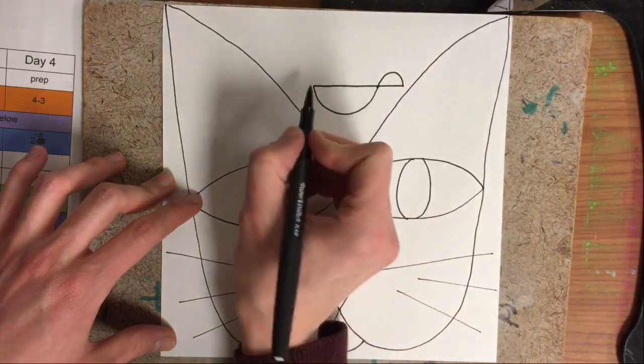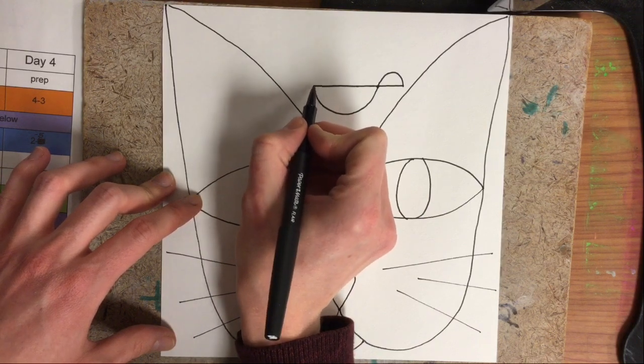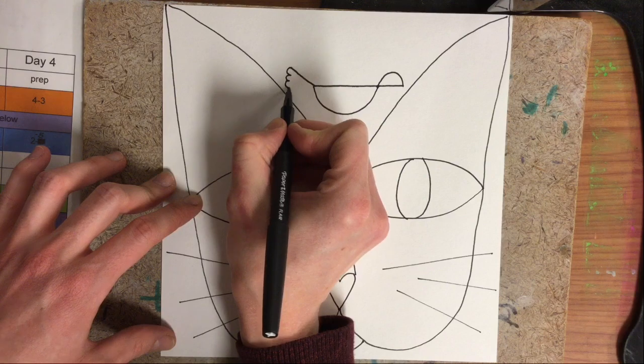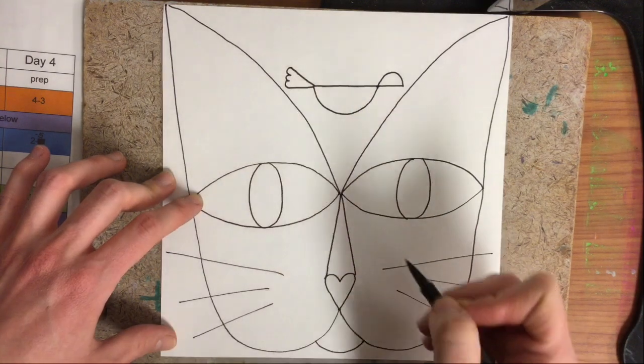Lastly we need the tail. I like to make my bird's tails a little fancier than Paul Klee did by going up, bounce, bounce, bounce, and back to the bird's body.